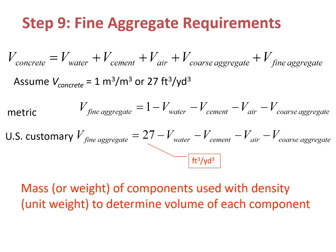We will calculate the amount of fine aggregate based on volume. From this equation you can see the volume of concrete equals the volume of water plus the volume of cement plus the volume of air plus the volume of coarse aggregate plus the volume of fine aggregate. Then in the metric system we can move this term to the left hand side, and we get the volume of fine aggregate equal to 1 minus volume of water minus volume of cement minus volume of air minus the volume of coarse aggregate.